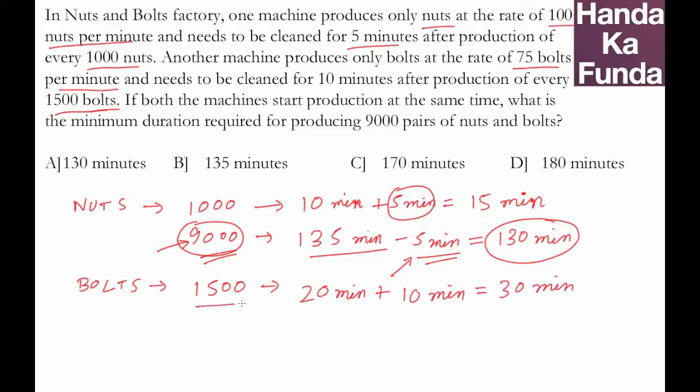So for 9000 it will become six times or 180 minutes. Once again by the same logic that we removed five minutes of cleaning time, we will remove 10 minutes of cleaning time from here. So that means it will take 170 minutes.